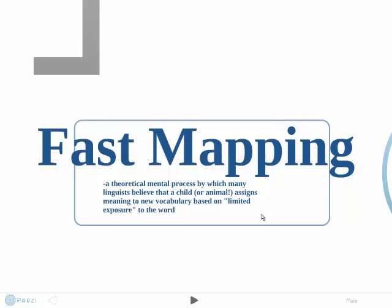I'm Andrew, and this is my presentation on Fast Mapping, which is a theoretical mental process by which many linguists believe that a child or an animal assigns meaning to new vocabulary based on limited exposure to the word.